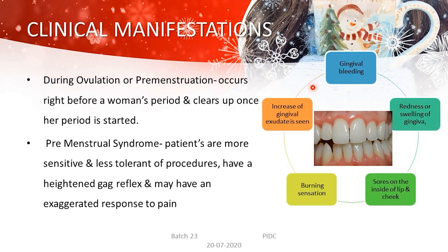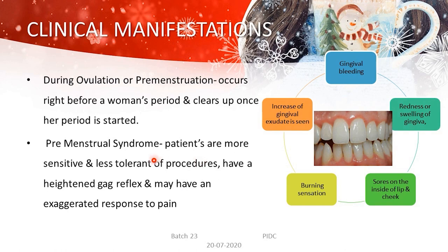Clinical manifestations of menstrual gingivitis include gingival bleeding, redness or swelling of the gingiva, sores on the inside of the lip and cheek, burning sensation, and increased gingival exudate. There is also a premenstrual syndrome occurring about 10 days before the menstrual cycle, just before ovulation, where patients are more sensitive, less tolerant of procedures, have a heightened gag reflex, and may show an exaggerated response to pain. Understanding patients during this period is very important.